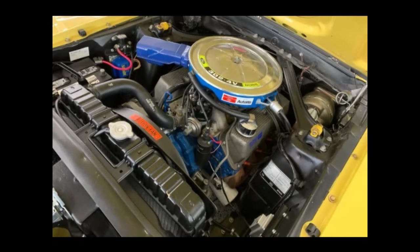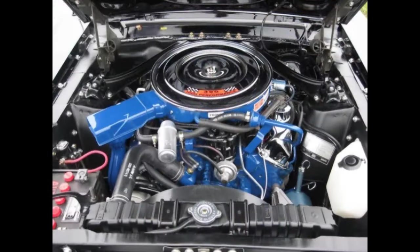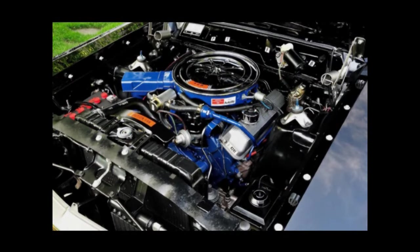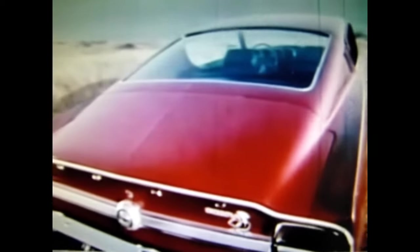302 cubic inch Windsor V8, 351 cubic inch Windsor V8, 390 cubic inch Thunderbird V8, and the 428 cubic inch V8. The Ford Fairlane Cobra was introduced in 1969 as a competitor for Plymouth Roadrunner.